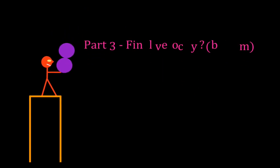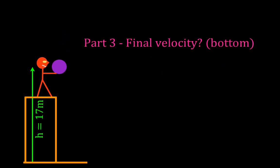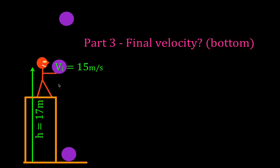In part three we're going to find the final velocity when we take this object, which is projected from an initial height of 17 meters above the ground, projected with an initial velocity of 15 meters per second straight up. It's going to stop, fall right back down to earth, and we want to know what is the final velocity right before it hits the ground surface.